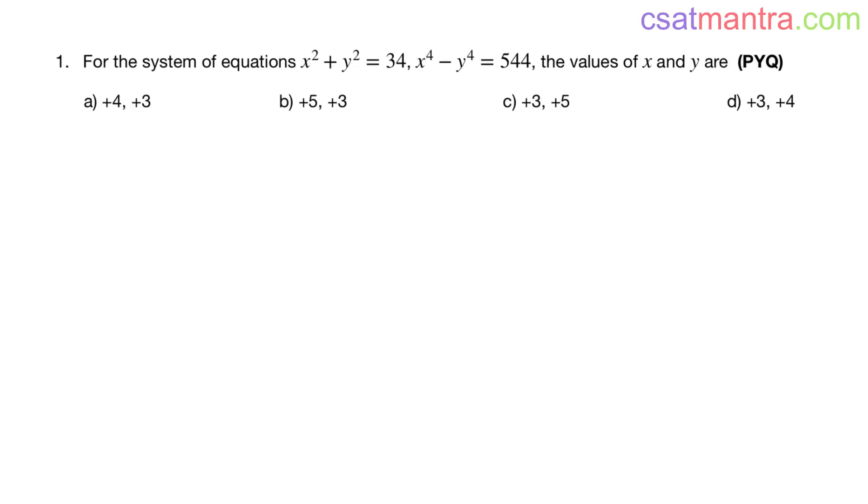Hello friends, welcome to CSAT Mantra. Welcome to our daily dose of solved questions. For the system of equations x² + y² = 34, x⁴ - y⁴ = 544, the values of x and y are.